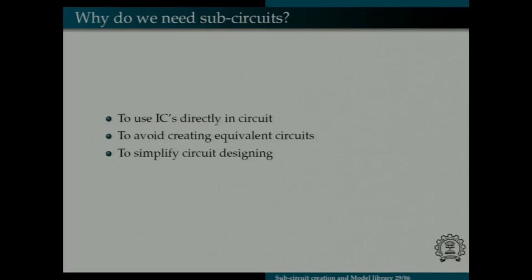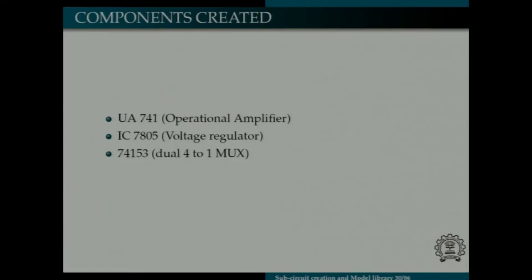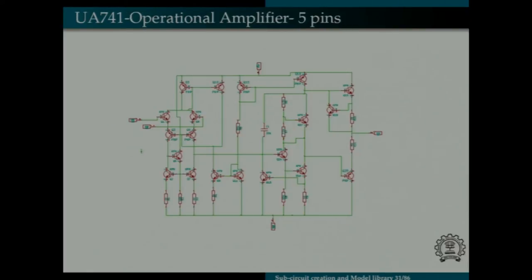Secondly we can avoid equivalent circuits. For example if I want to construct an instrumentation amplifier I can directly import the sub-circuit for that instead of constructing the amplifier as such. And thirdly when we do all these it makes the circuit designing simpler. These are the components which I created, UA741 operational amplifier, 7805 voltage regulator and 74153 MUX. This is the sub-circuit meant for UA741. It basically consists of four stages, differential input balanced output, differential input unbalanced output, voltage regulator and push-pull amplifier. So this has been designed with five ports, two for power supplies, one for output and two for inputs.